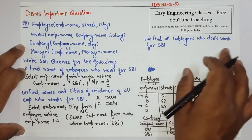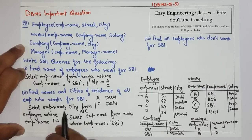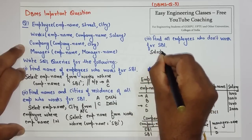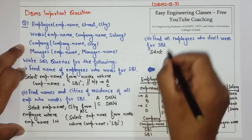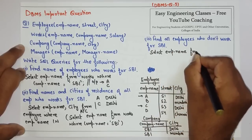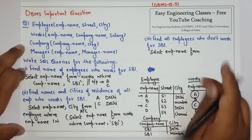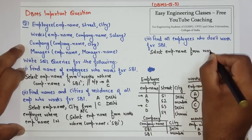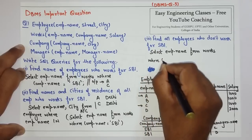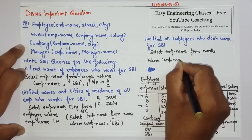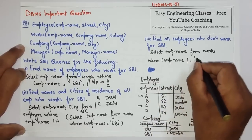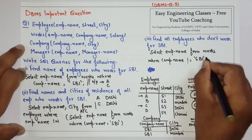Then you have to find all employees who don't work for SBI. The same query works — just write: SELECT EMP_name FROM works WHERE company_name != 'SBI'.